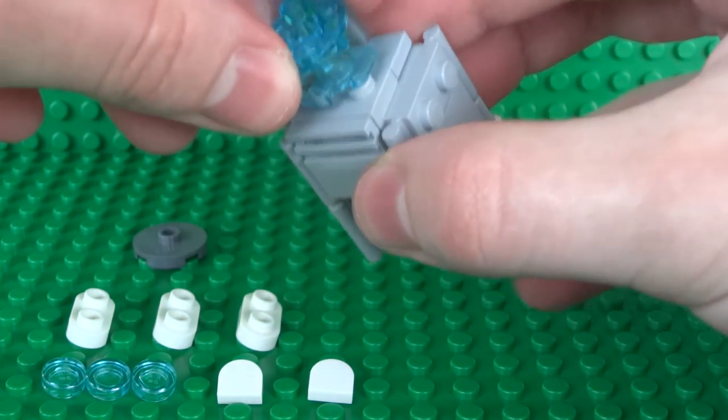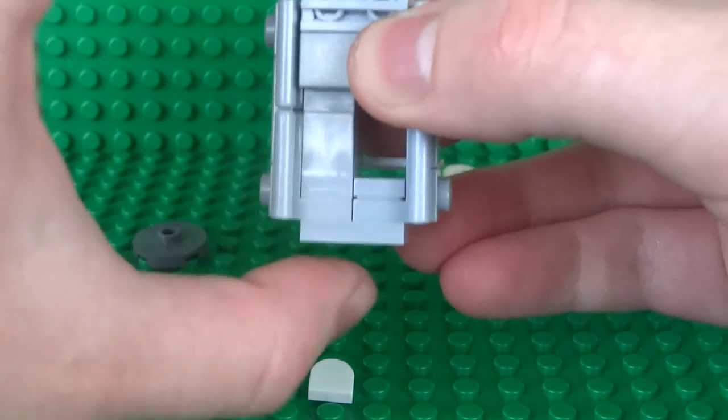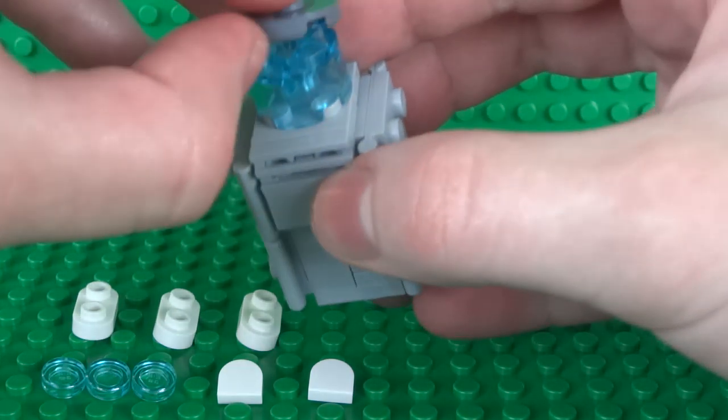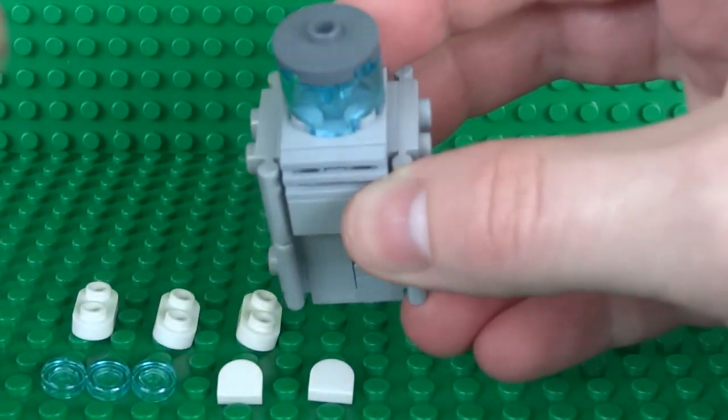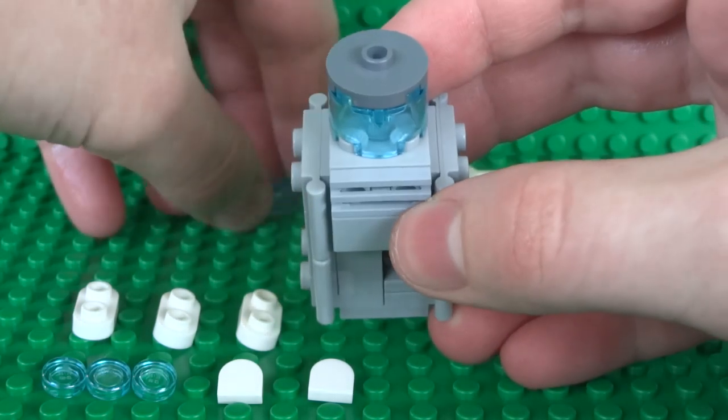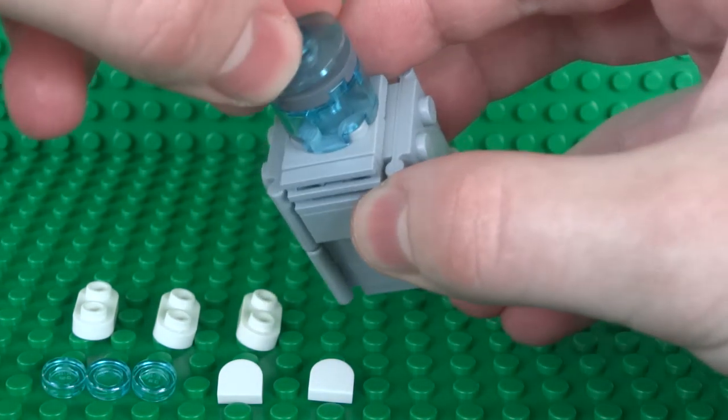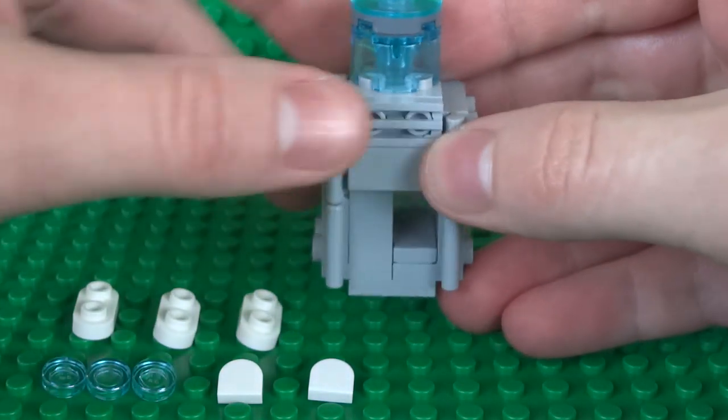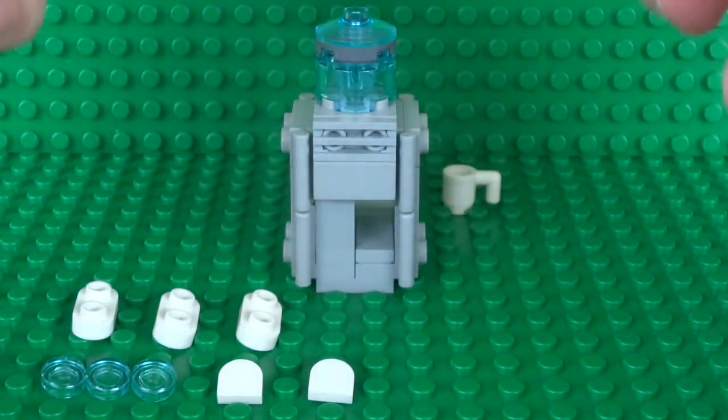So then for the tank of water at the top, use a 2x2 round brick and a 2x2 tile with the stud in the center, and that will allow you to attach a 2x2 satellite dish piece just to round off the top and make it look a little bit more like the top of a water cooler.